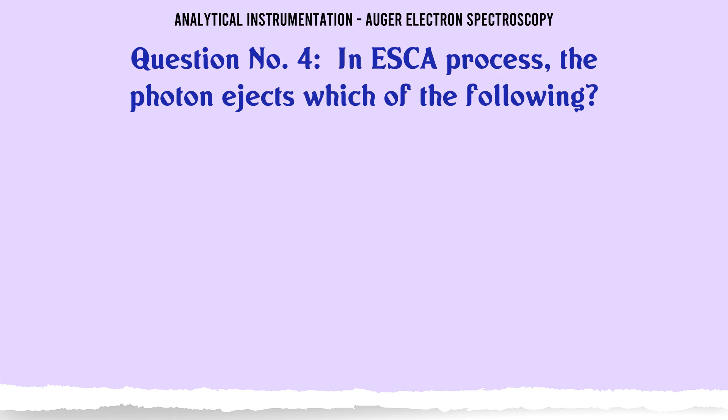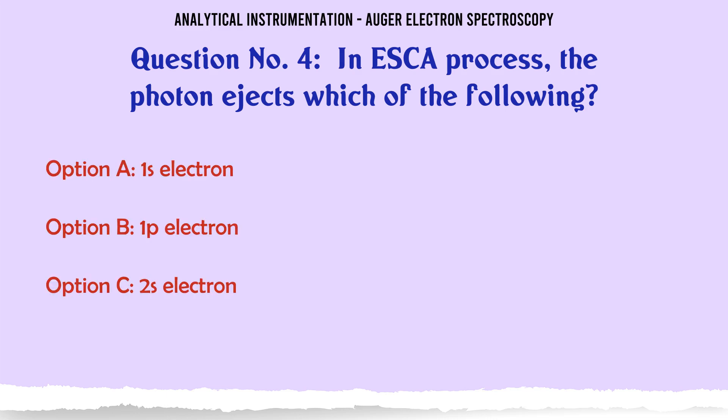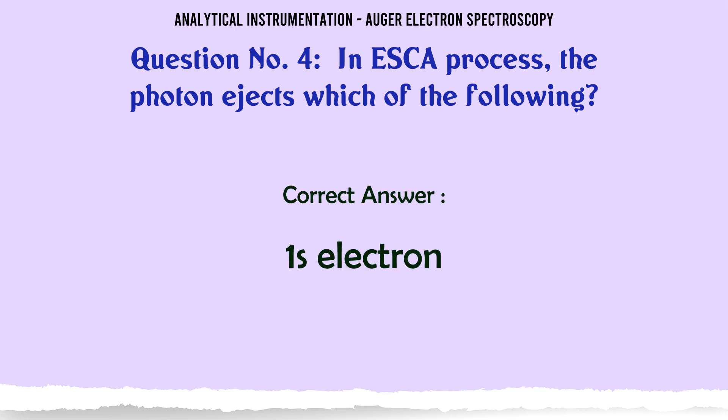In the ESCA process, the photon ejects which of the following? A. 1S electron. B. 1P electron. C. 2S electron. D. 2P electron. The correct answer is 1S electron.